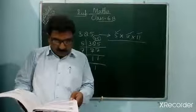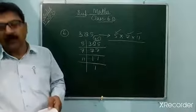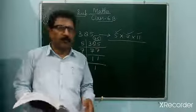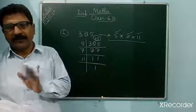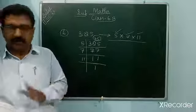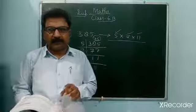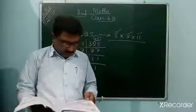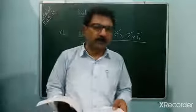Question number 7: true or false — if two numbers are co-primes, at least one of them must be prime. This is false, because it is not necessary to be prime. For example, take 8 and 15: 8 is not a prime number and 15 is also not a prime number — they are composite numbers. So this statement is false. For today's class, thank you students. I hope you will complete the work.